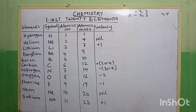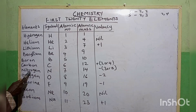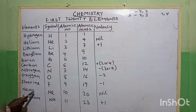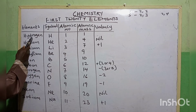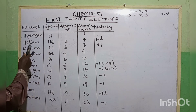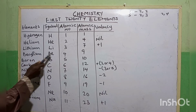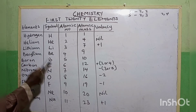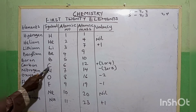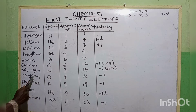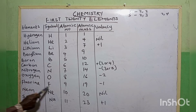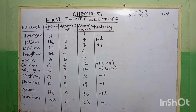We have hydrogen (H), helium (He), lithium (Li), beryllium (Be), boron (B), carbon (C), nitrogen (N), oxygen (O), fluorine (F), neon (Ne), and sodium (Na), with their atomic numbers and atomic mass or mass numbers listed.